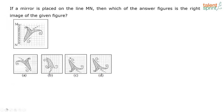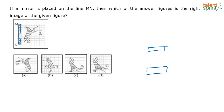The last question for today's session. If a mirror is placed on the line MN, then which of the answer figures is the right image for the given figure? Whenever you have questions on mirror images — if the mirror is placed on the left or on the right hand side, only your left and right hand side will interchange. Everything else will remain the same. If the mirror is placed on the top and the bottom, the top and the bottom of the image will interchange.